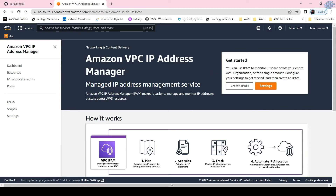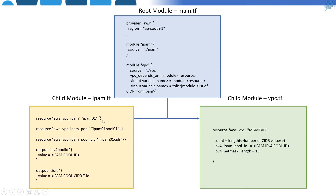Here's how we are going to use this: first I'm going to create an IPAM service, create an IPv4 pool (called a scope), and in that pool we are going to create CIDRs. We are going to pass two values as output from this module — one is the IPAM pool ID for reference by the VPC, and the other is the list of CIDR blocks created in that pool. We'll use this value as the length for the count function and let the VPC automatically get CIDR blocks from the pool ID.